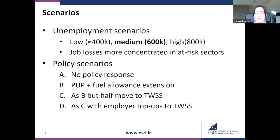In scenario B, we introduced the pandemic unemployment payment and the extension to fuel allowance. Everyone who was previously unemployed and claiming jobseeker's benefit is now eligible for the pandemic unemployment payment, as long as it is not less than what they would otherwise receive on jobseeker's benefit. Scenario C is as B, but half of those who are unemployed move to the temporary wage subsidy scheme, with their employer paying no top-ups. Scenario D introduces employer top-ups to the maximum allowable level.